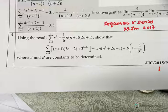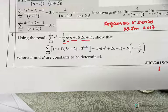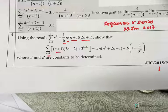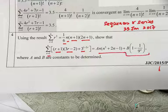Using the result summation r squared equals 1/6 n(n+1)(2n+1), we want to show that the summation of (r+1)(3r-2) + 3^(1-2r) equals to the following term. So what we need to do is, using the understanding that we have, we try to solve for our summation.